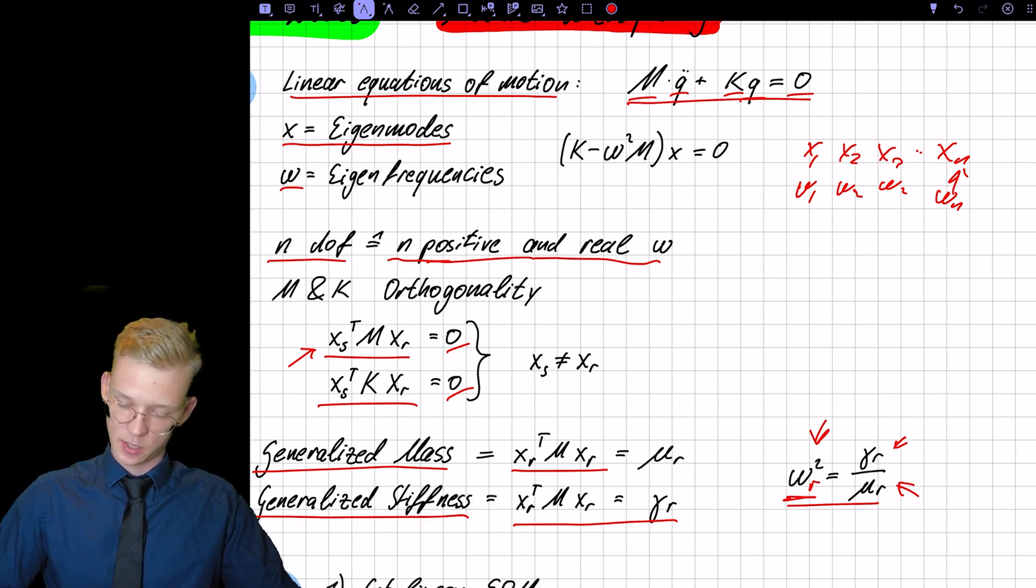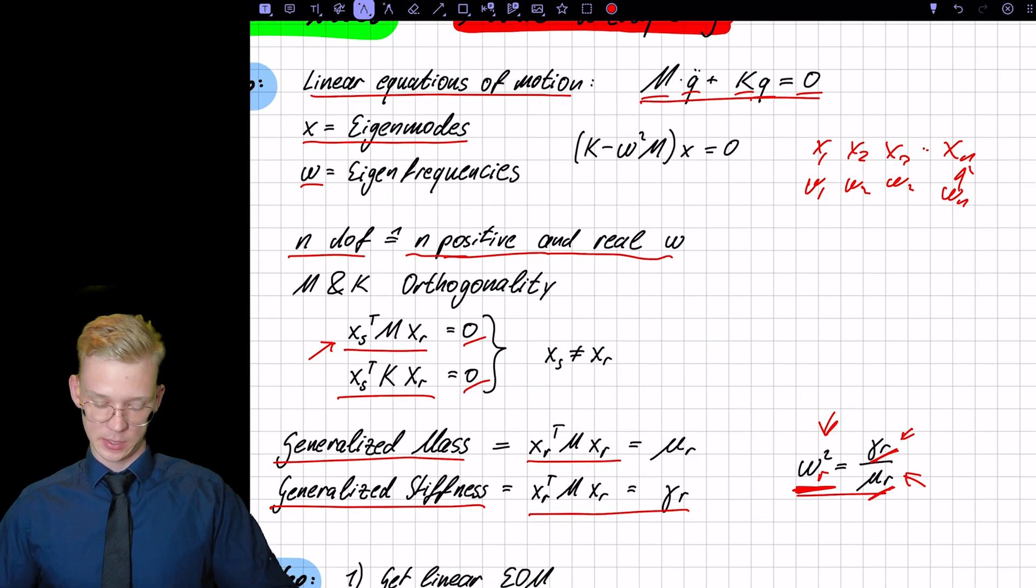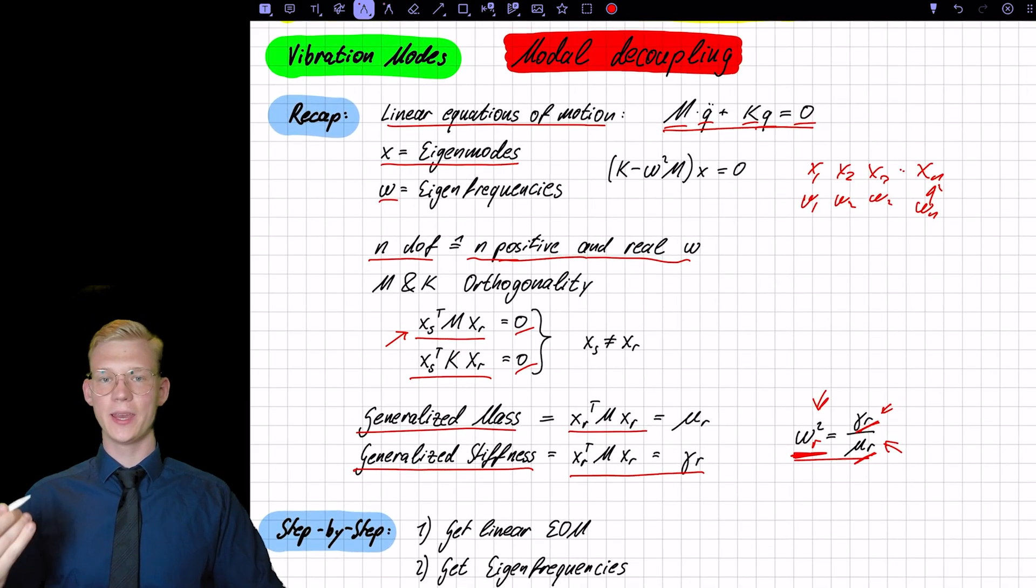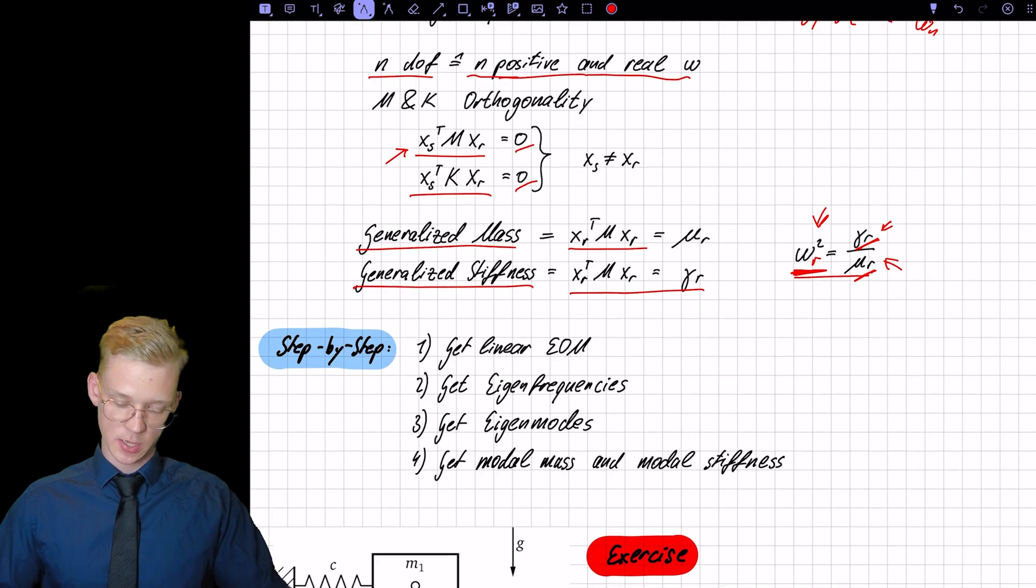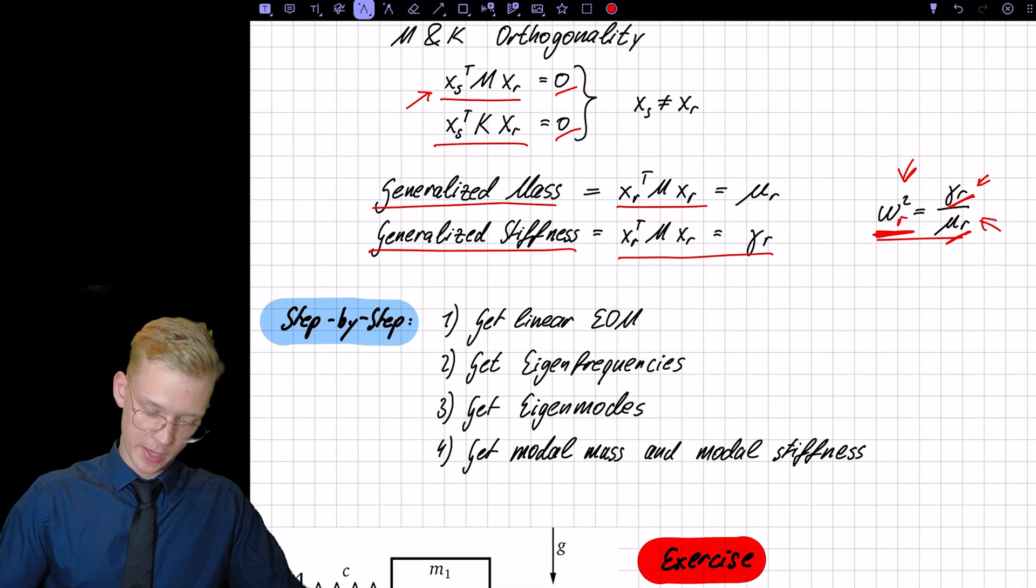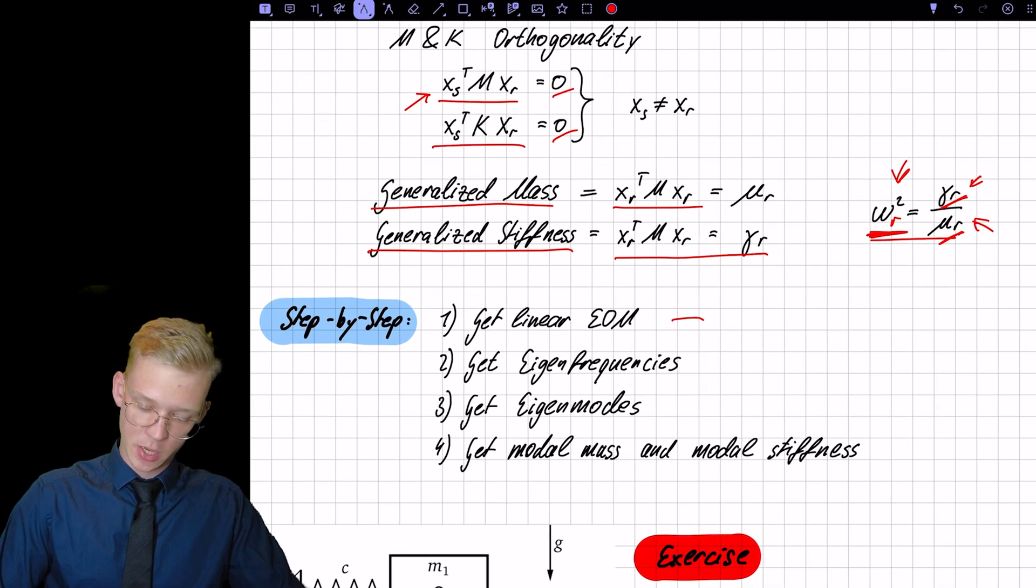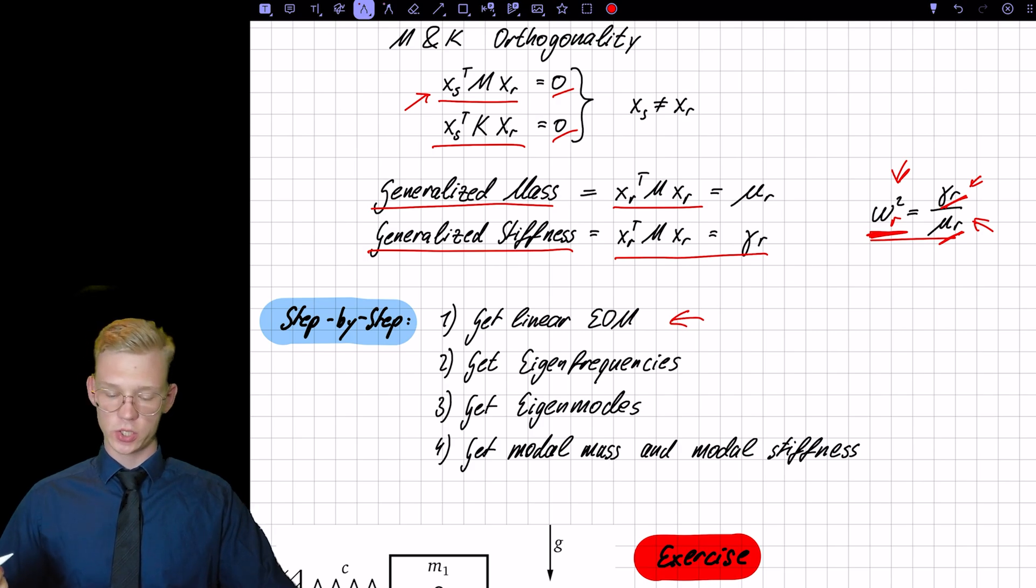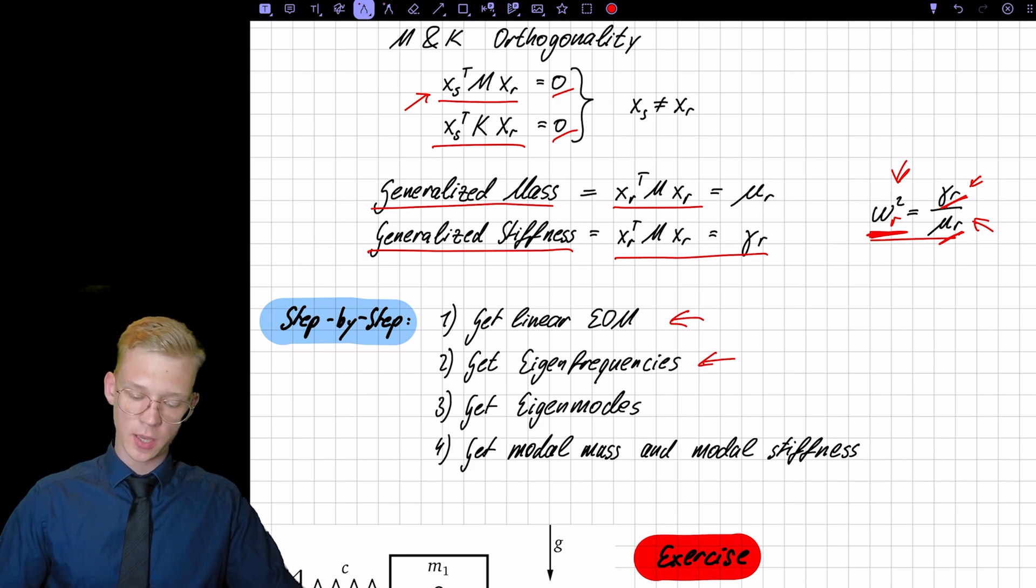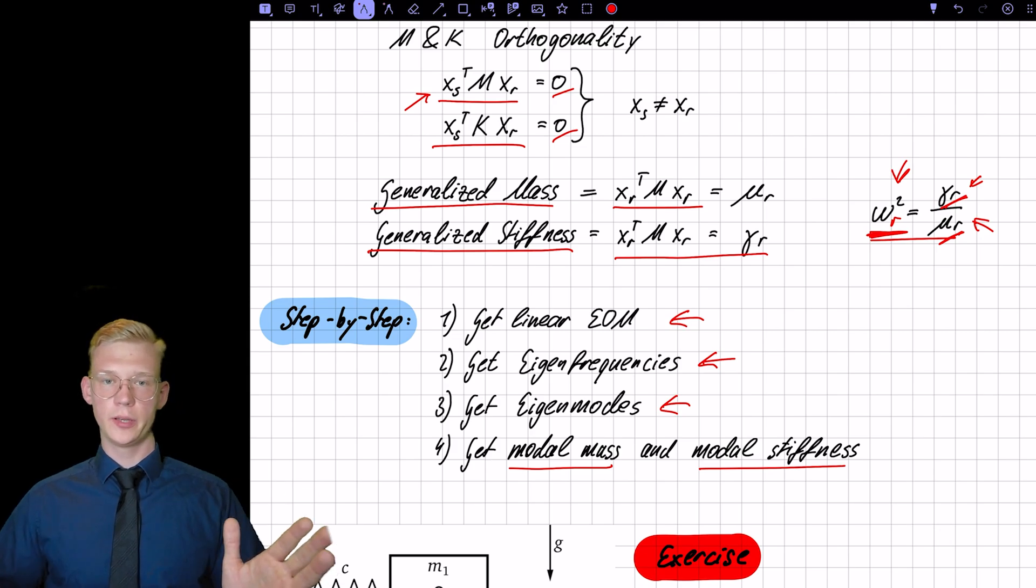And we know that with the Rayleigh quotient that our stiffness divided by our modal mass is our eigenfrequency. So we have xr, we have r modal stiffnesses, and r modal masses. And of course, we have r eigenfrequencies. So how do we get an uncoupled set of equations? We have a step-by-step solution. So first, we have to get the linear equations of motion. Then we have to get the eigenfrequencies and the eigenmodes. Then we have to get the modal mass and modal stiffness. And then we're already done.